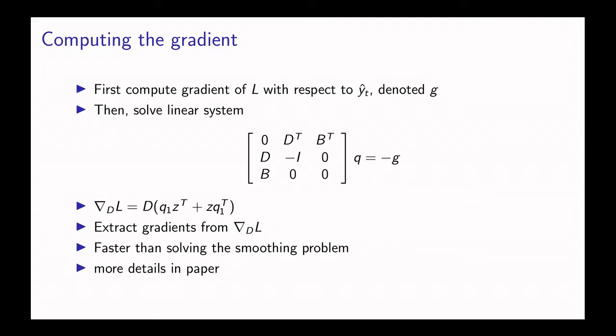This linear system has the same coefficient matrix that we had to solve before to find the to perform Kalman smoothing. Since we've already factorized this matrix, solving the system again for another right hand side will be very fast.